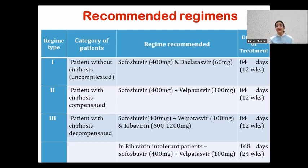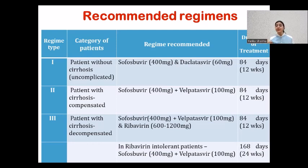However, there may be patients who are not tolerating Ribavirin. In those patients with Ribavirin intolerance, you continue the same regimen as the second category — S plus V, Sofosbuvir plus Velpatasvir — but because these patients have a severe course of illness, it is given for 6 months, i.e., 24 weeks.